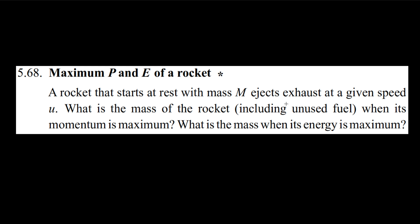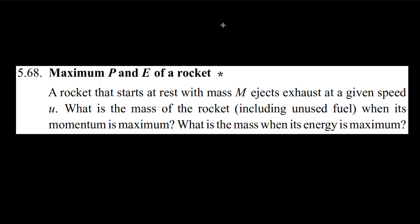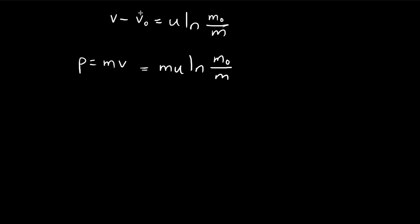What we want to find is the corresponding mass of the rocket when momentum is maximized. We can do that by finding the momentum first. Momentum is equal to mass times velocity, so it's equal to mass times this expression. Note that the initial velocity of the rocket is equal to zero — it starts at rest — so we can ignore that term for this problem.